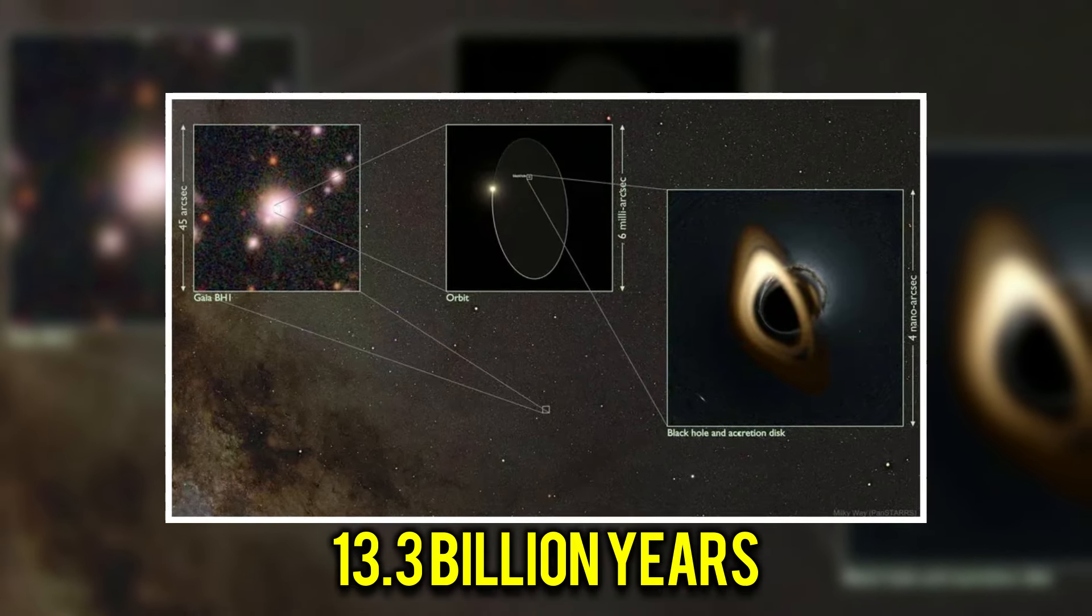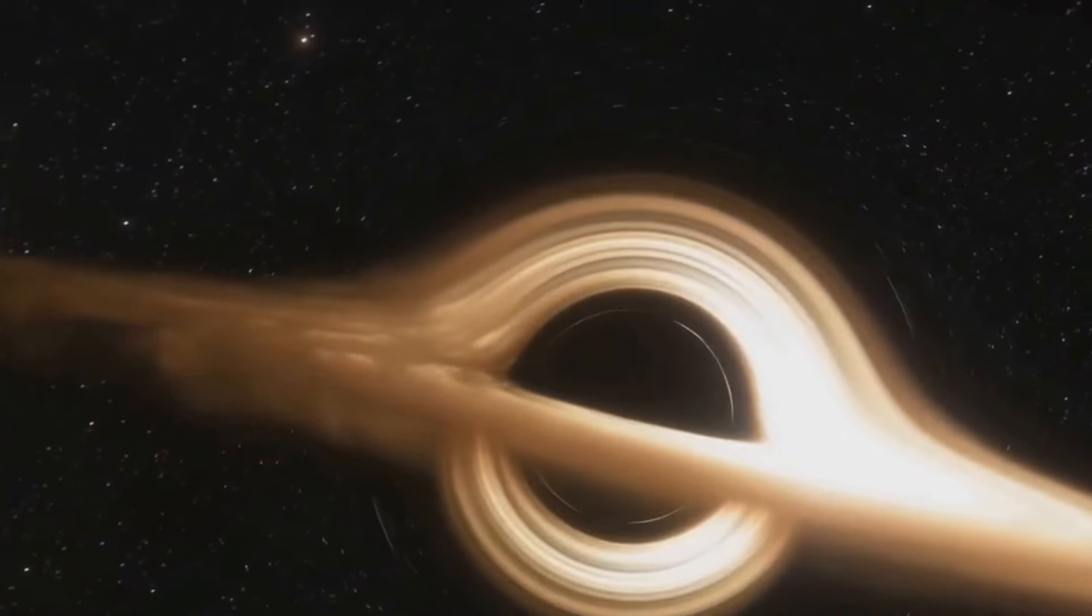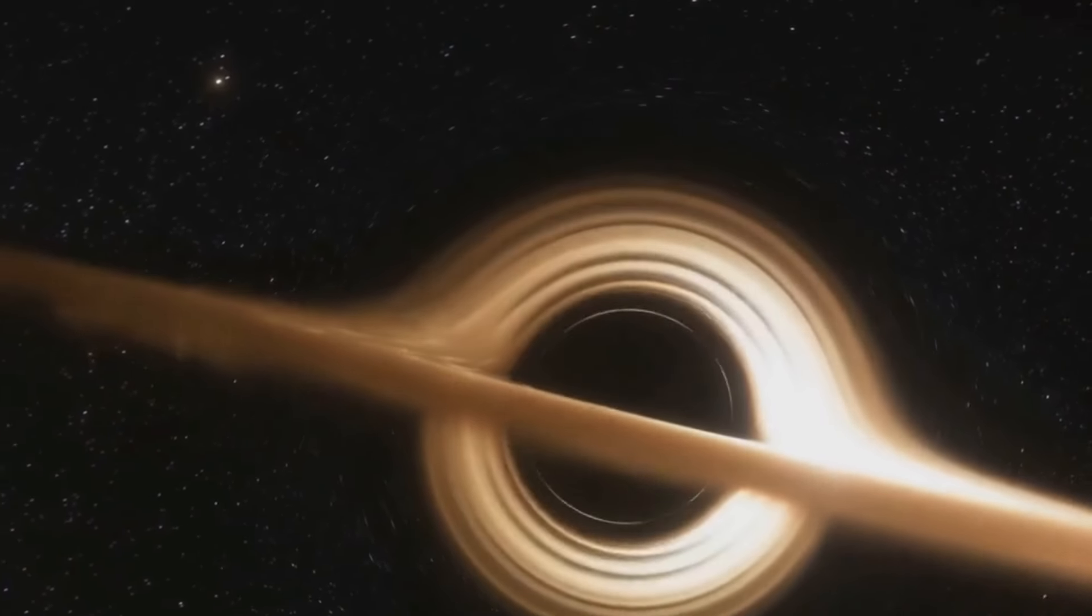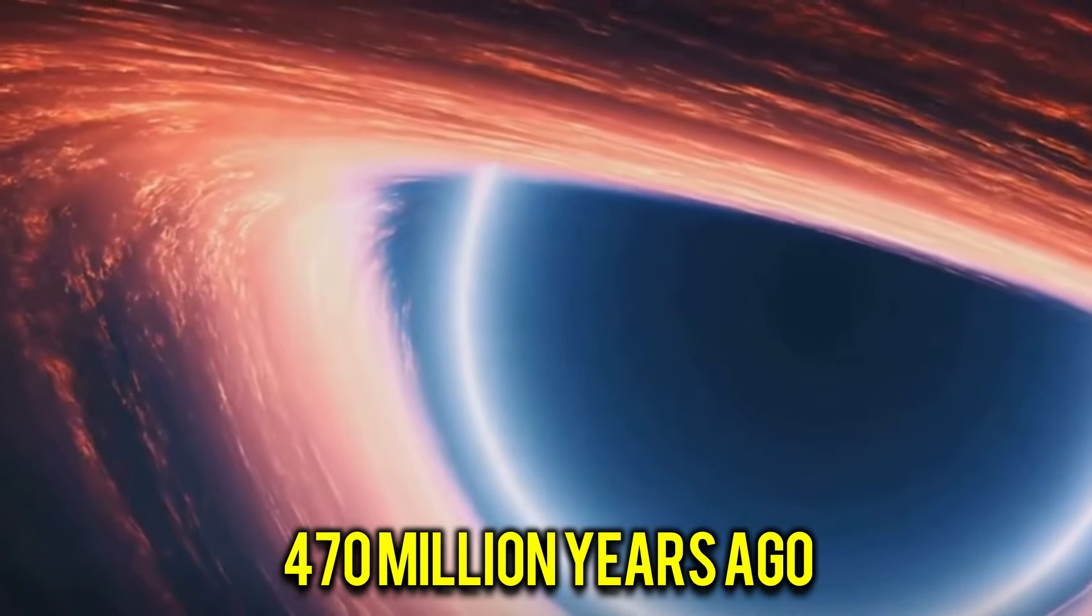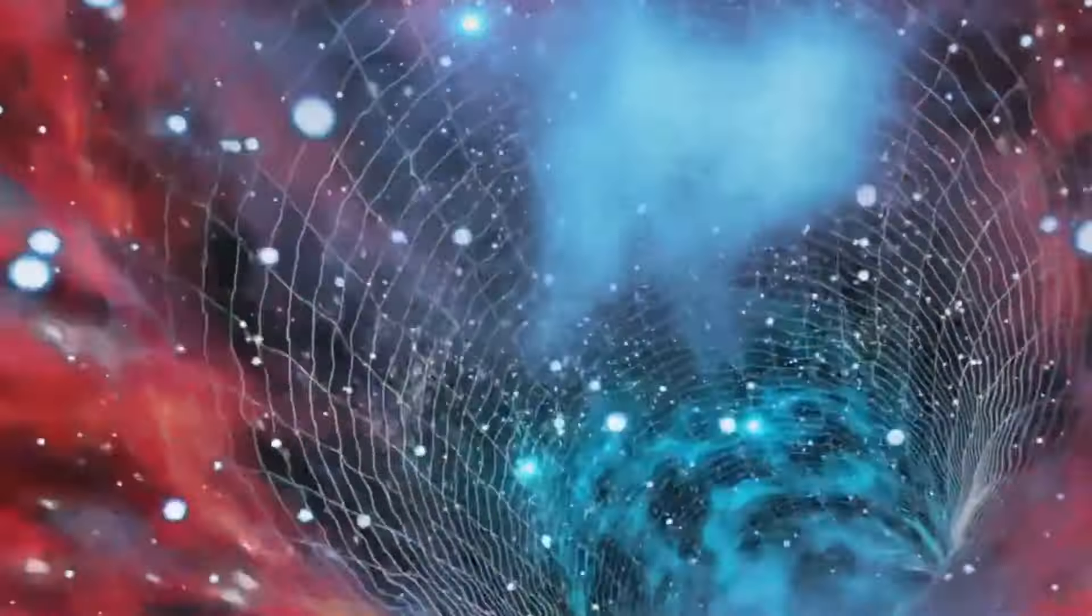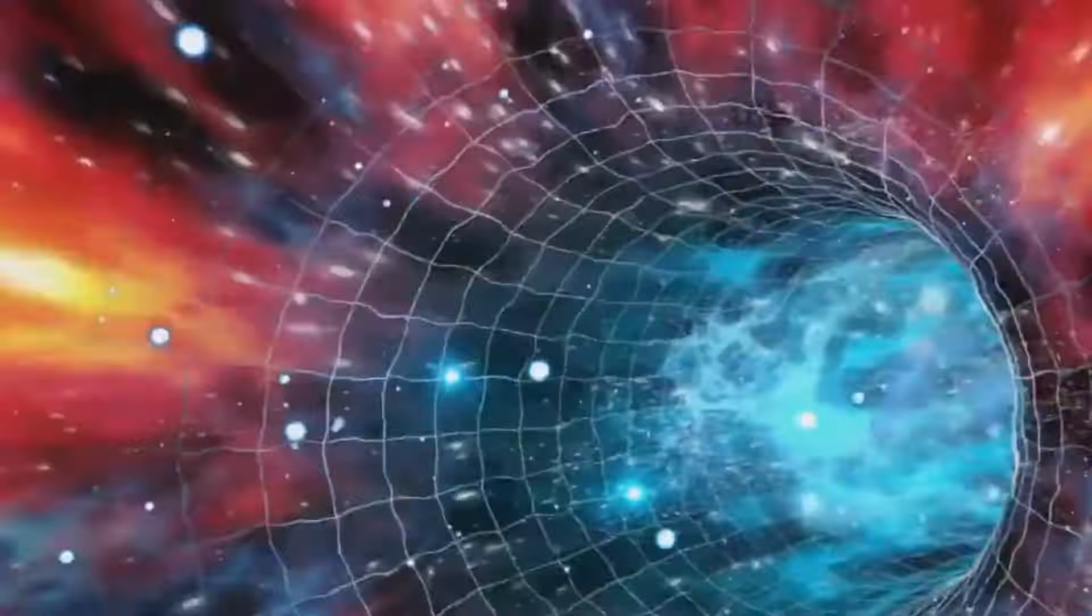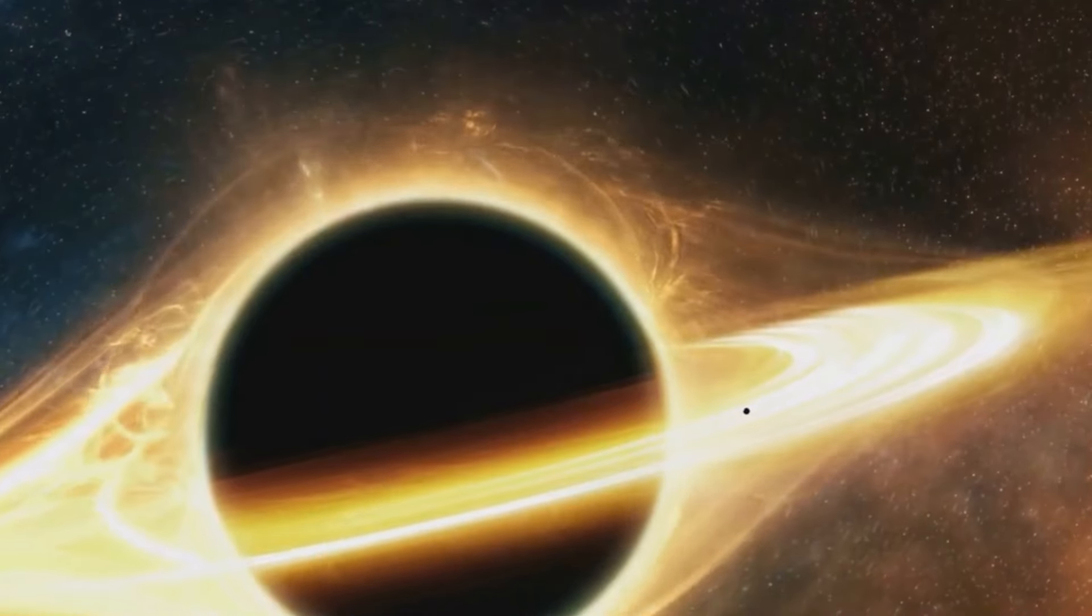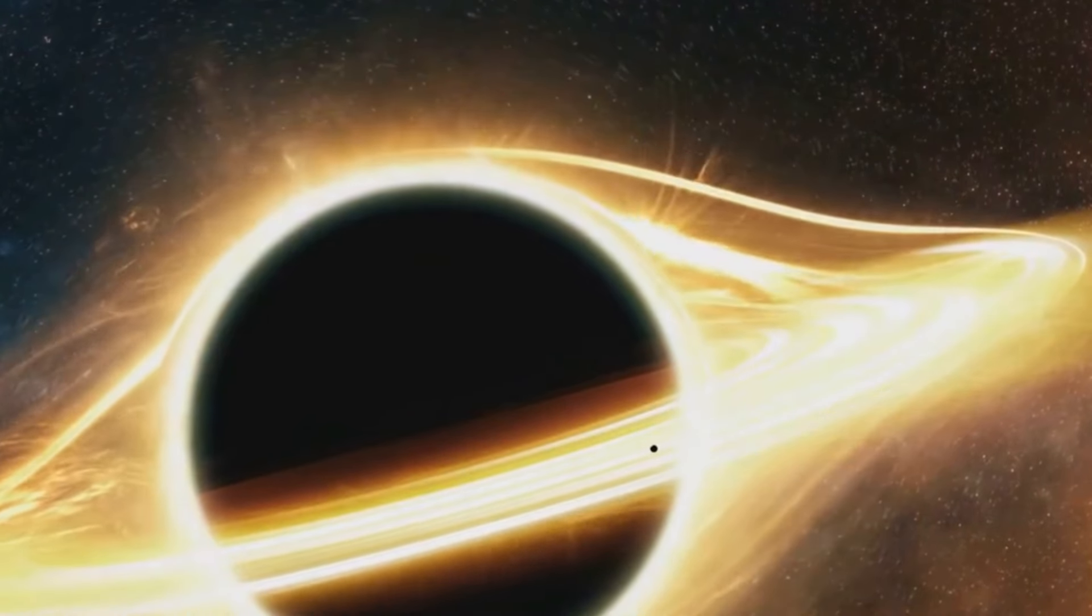At a distance of 13.2 billion light years from Earth, UHZ1 allows us to observe the black hole in its early stages, shortly after the Big Bang, some 470 million years ago. Astoundingly, this black hole is equivalent in mass to the sum of all the stars in its host galaxy, with an estimated mass ranging from 10 million to 100 million times that of the Sun.